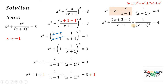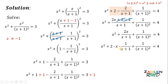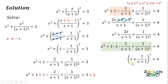Positive 2 and negative 2 cancel out, giving us 2x all over x plus 1. Take note that 2x all over x plus 1 can be written as 2 times x times 1 over x plus 1. This is the same as a squared plus 2ab plus b squared, where a equals x and b equals 1 over x plus 1. Therefore, we can factor this expression as x plus 1 over x plus 1, quantity squared.